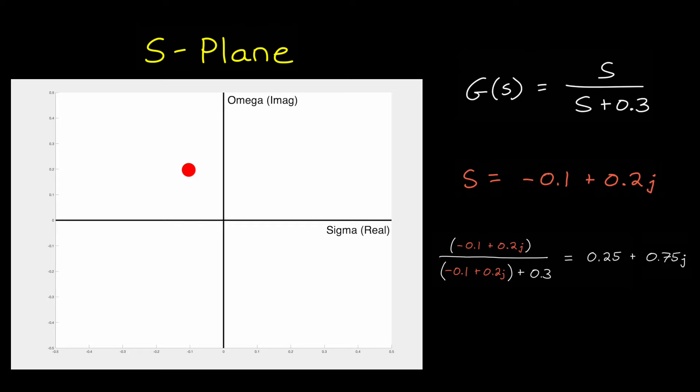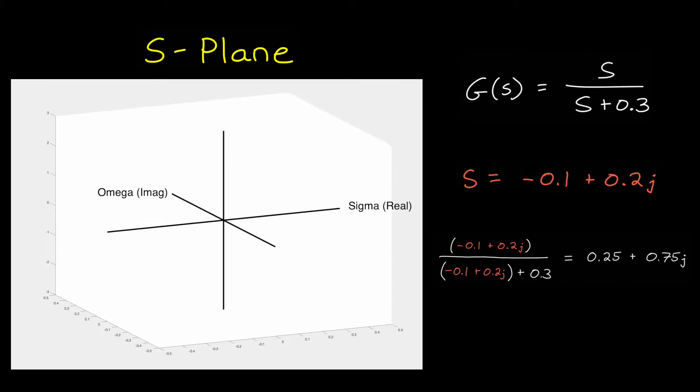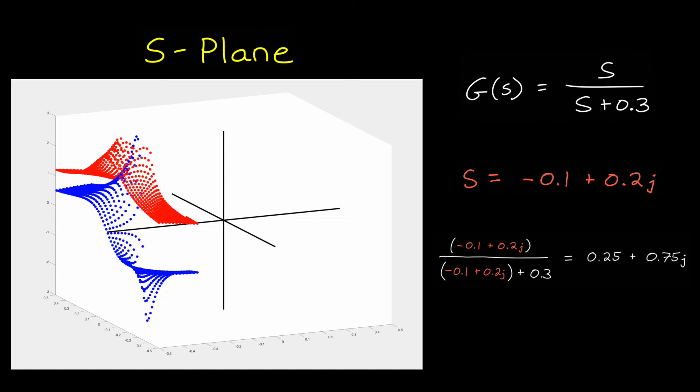This is analogous to plugging in different values of t in a time domain function. So for s equals minus 0.1 plus 0.2j, this transfer function has the result 0.25 plus 0.75j. Now, to show you what the entire s-plane looks like for this transfer function, let me rotate the axis so that I can plot the value along the vertical. And now I'm just going to cycle through lots of different s values across the entire plane.